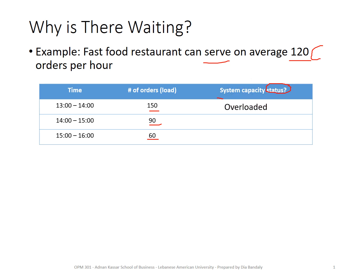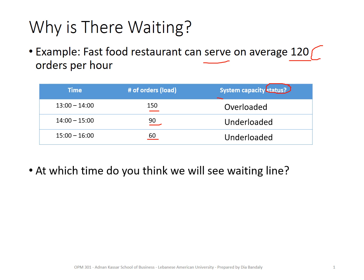Now, the time slot with 90 orders is underloaded, and 60 is also underloaded. At which time do you think you will see a waiting line in this restaurant? Maybe some of you answered that you will see a waiting line when the system is overloaded. While you are correct, this is not very accurate. We may already have the opinion that waiting lines happen whenever we have an overloaded system, like in the bank example.